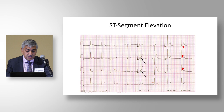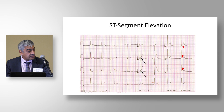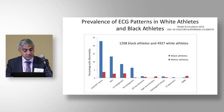ST-segment elevation is common in black individuals, present in around 66%. You see J-point elevation in most precordial leads with concave ST-segment elevation, and J-point elevation in the lateral and occasionally inferior leads. The J-point elevation is accompanied by concave ascending ST segments. This is completely normal and is not associated with any cardiac pathology.